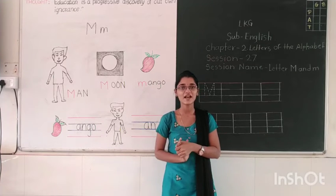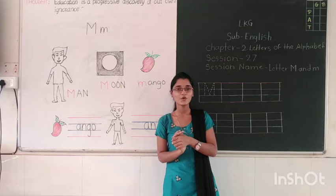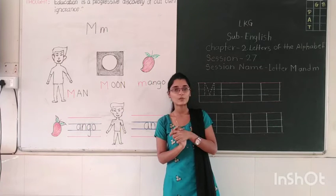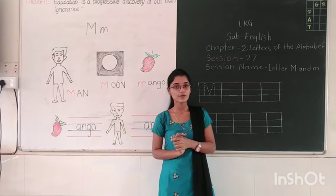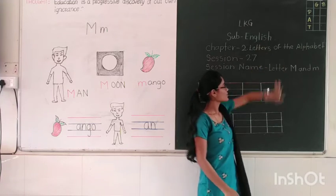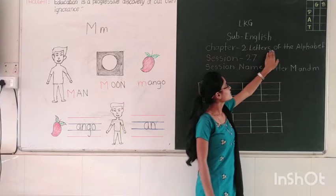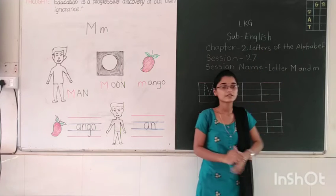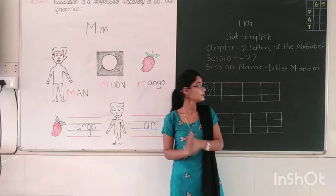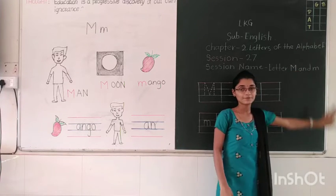Hello my dear students, how are you? Happy? I hope you all are well and doing your work very well. Now students, today our subject is English, Chapter 7, letters of the alphabet. Today we are going to learn letter capital M and small m.